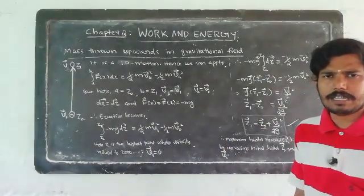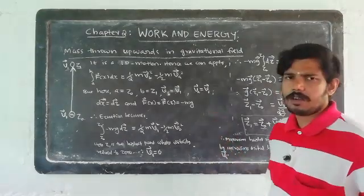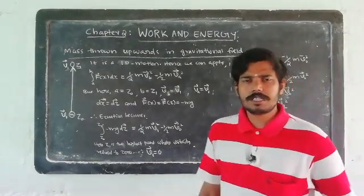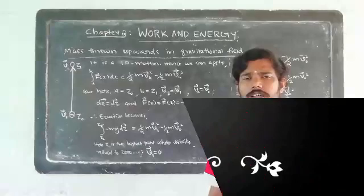So the important expression in this concept is the integral from A to B of F(x) dx equals half m v_b squared minus half m v_a squared. We will discuss this further in the next class. Thank you.